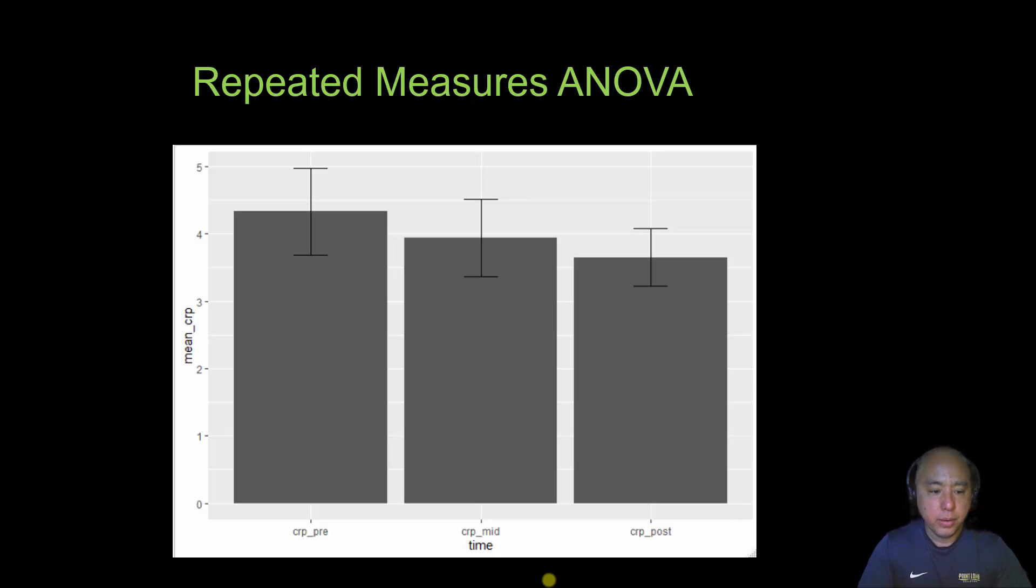We're going to go ahead and calculate some summary statistics and plot that. So just based on the column plot here, the Y axis represents the mean CRP levels at the pre, mid, and post in the training regimen. You can see that the average CRP levels decrease. What we want to know is that statistically significant. Is that different from what the null hypothesis is in the general population? The null hypothesis in this case is that exercise or training regimen or the time in the training regimen has no effect on CRP. So we are going to run a repeated measures ANOVA in RStudio to determine this.